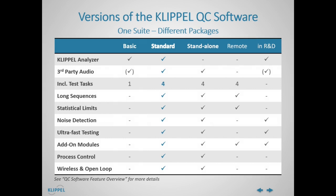To benefit from all unique features of Klipple QC, the standard version is based on the same software framework but enhanced by advanced features setting new standards in speaker and audio system testing. It can be used for testing with the Klipple Analyzer or third-party audio devices. It includes four different test step types providing various stimuli and result parameters. The maximum test sequence length is unrestricted compared to QC Basic.